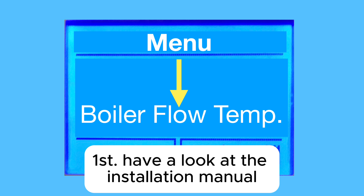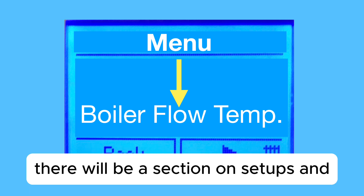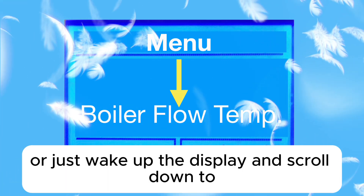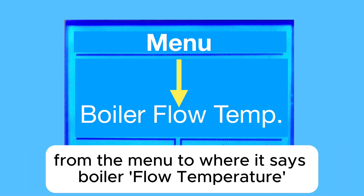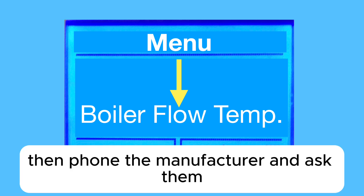First, have a look at the installation manual if you've got it to hand. There will be a section on setups and parameters of the boiler. Or just wake up the display and scroll down from the menu to where it says boiler flow temperature. If you're not sure, phone the manufacturer and ask them.